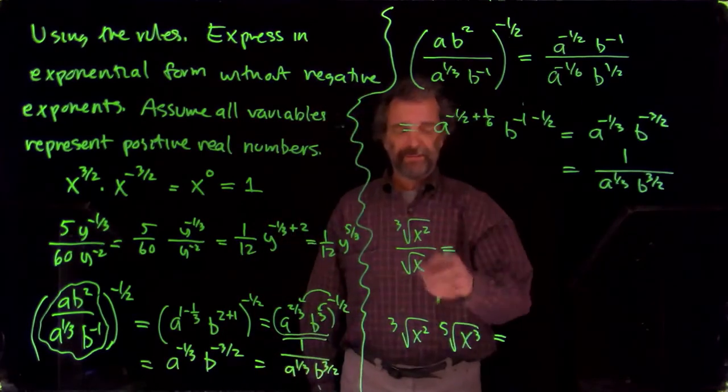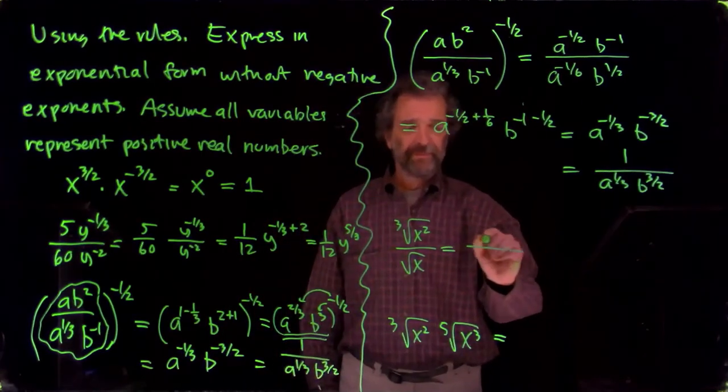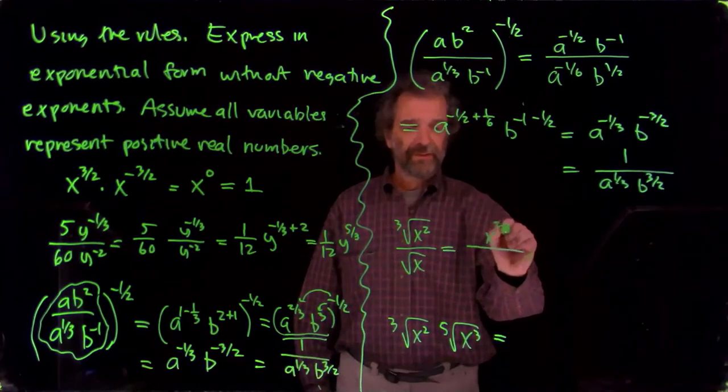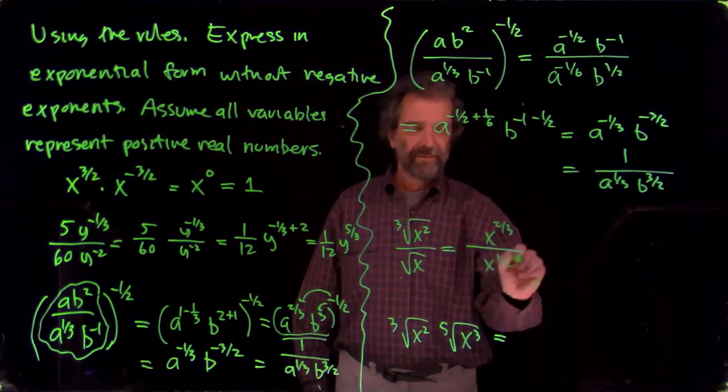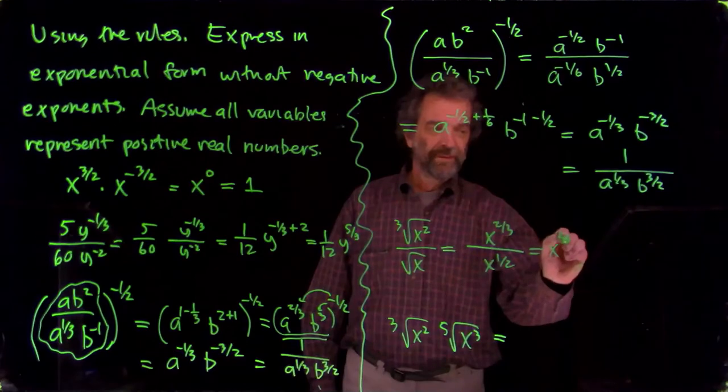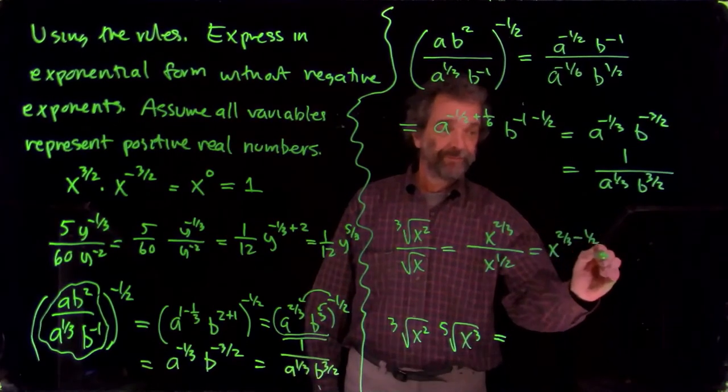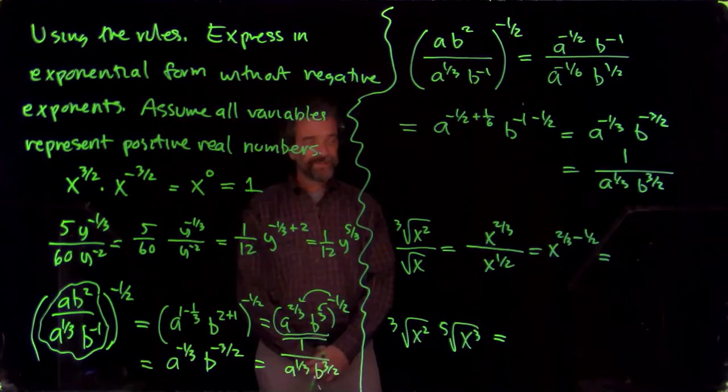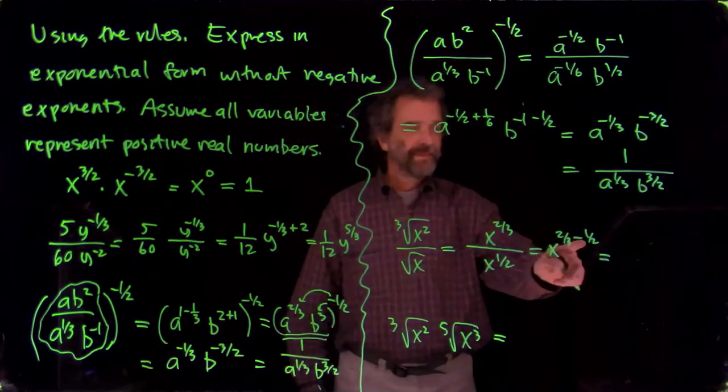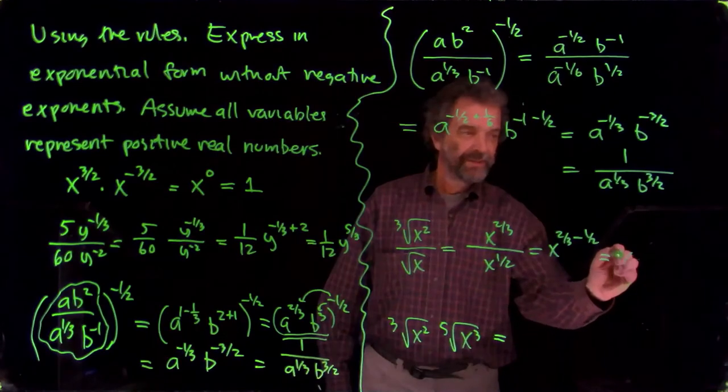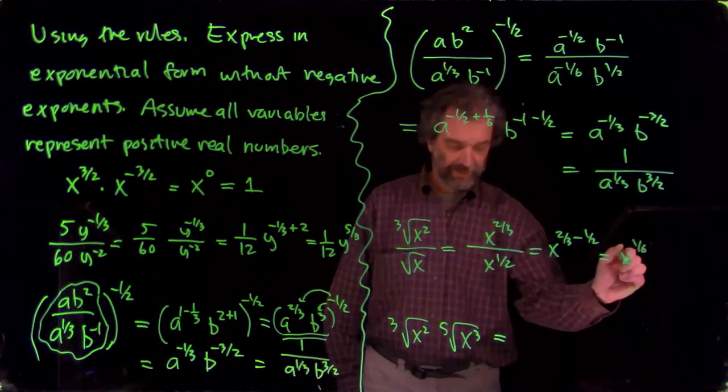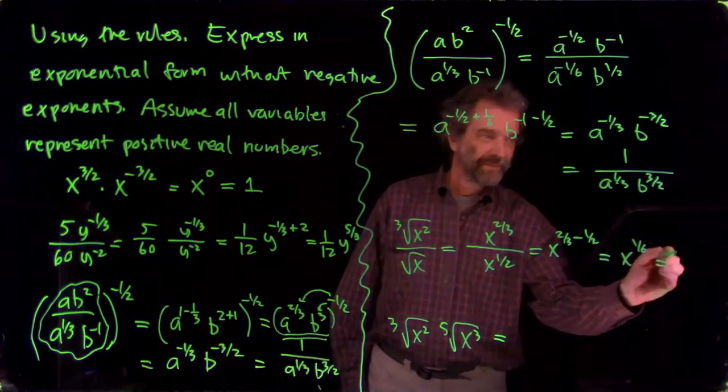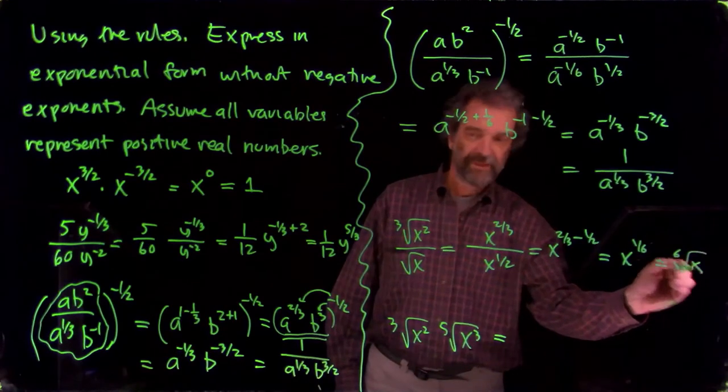Here we're going to replace these with their fractional exponent counterparts. That's x to the two-thirds over x to the one-half. So that'd be x to the two-thirds minus one-half. So two-thirds minus one-half is four-sixths minus three-sixths. x to the one-sixth. I guess I could write it like this if I wanted to. Sixth root of x. Kind of interesting looking.